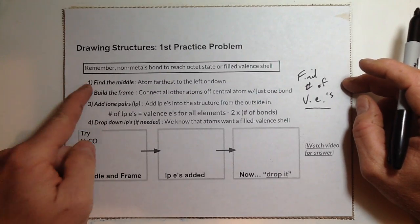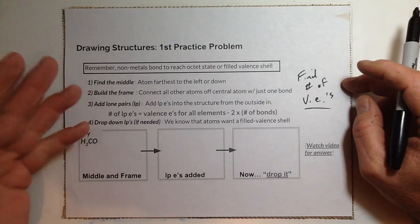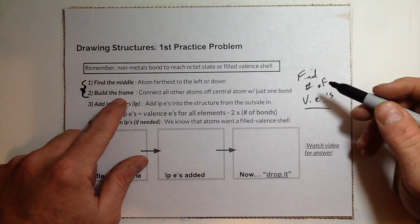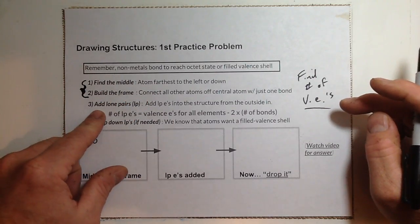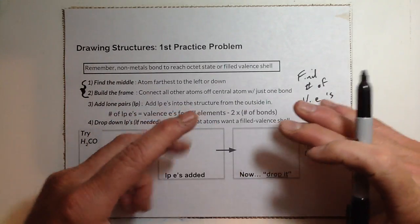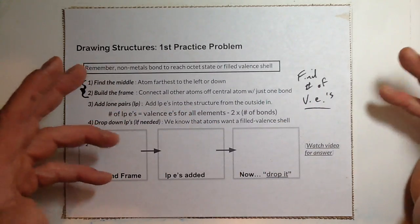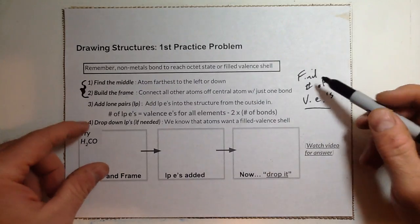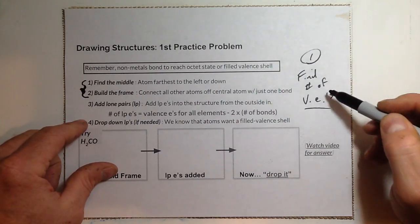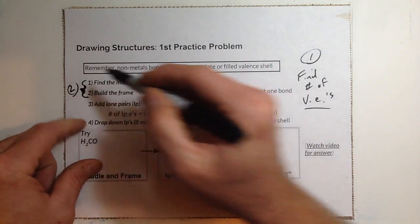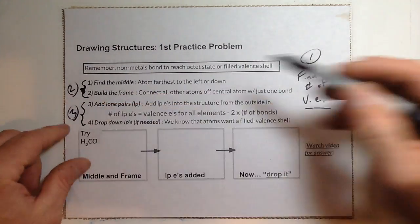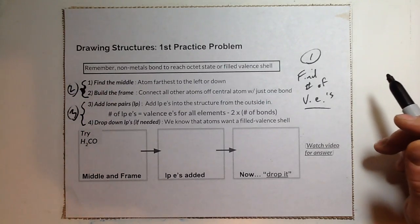Past counting valence electrons, we also need to find the middle element and frame it — so find the middle and frame it is step two. Step three is adding in the lone pairs from the outside in, and we drop down if needed. So you might say we have three steps: find the number of valence electrons, find the middle and frame around it, then fill in with electrons and drop down if needed.